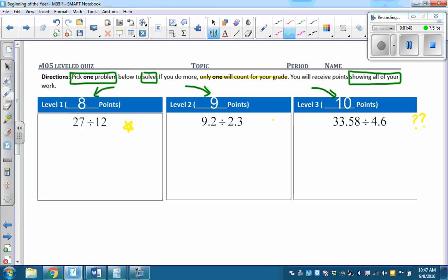But in the end, I'm only going to grade one problem. So I'm going to look at your work and grade the highest level that you do and give you the points for that. In other words, the most points you could get on this test is ten. If you do all three problems correctly, you still get ten points. If you only do the level one problem, you get eight points if you got it correct. If you did the level two problem, you get nine points if you did it correct.